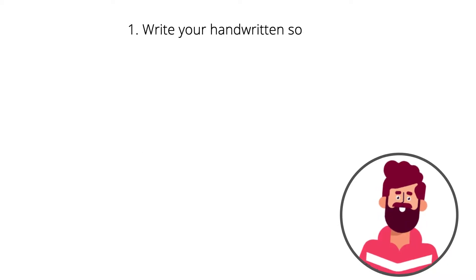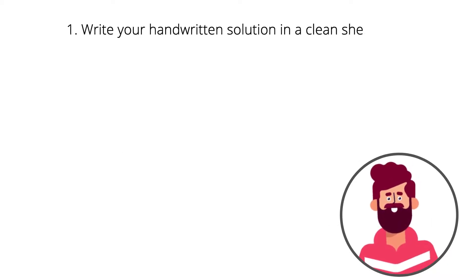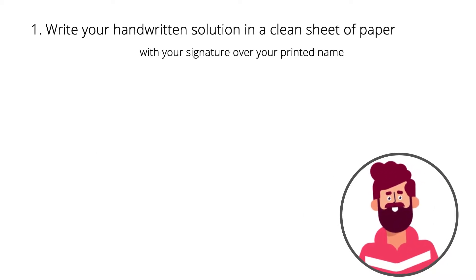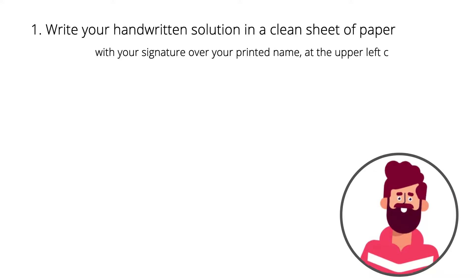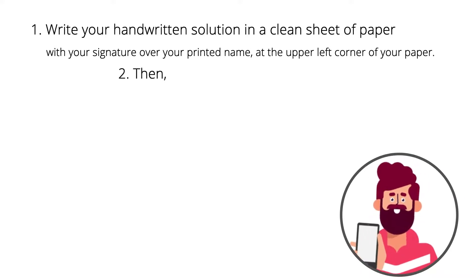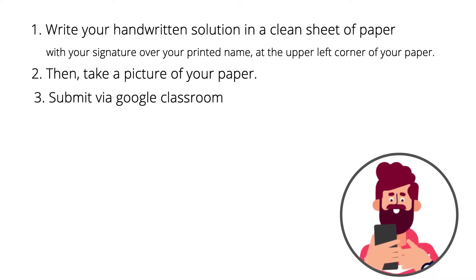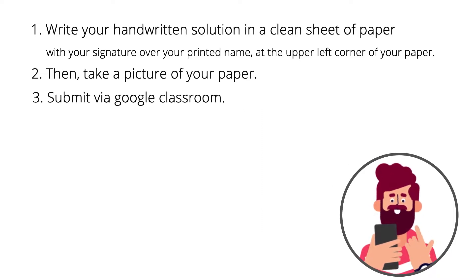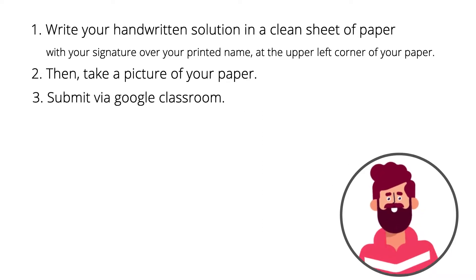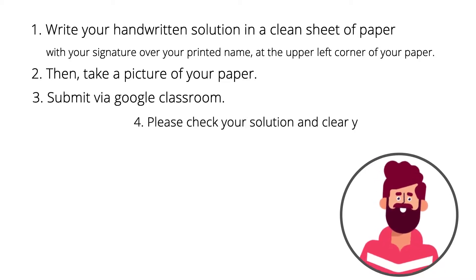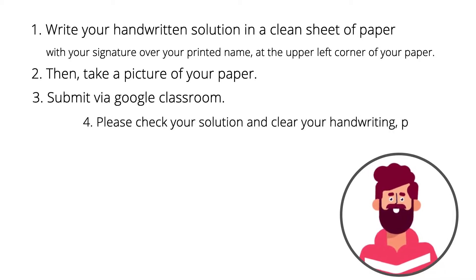Write your handwritten solution on a clean sheet of paper, with your signature over your printed name at the upper left corner of your paper. Then take a picture of your paper and submit via Google Classroom. Deadline is posted in your respective Google Classroom classes. Please check your solution and clear up your handwriting prior to submission.